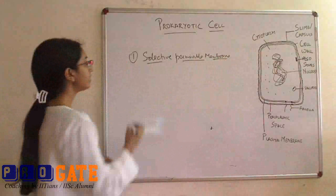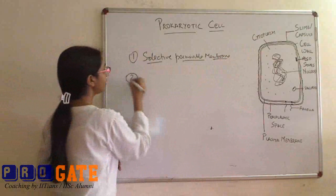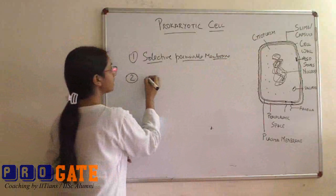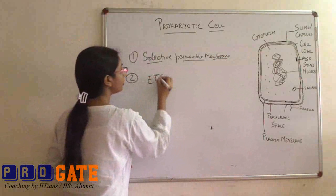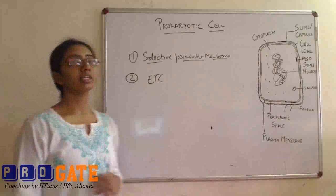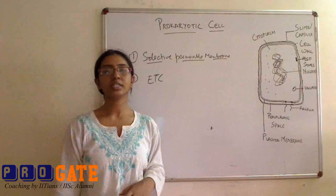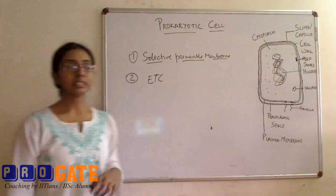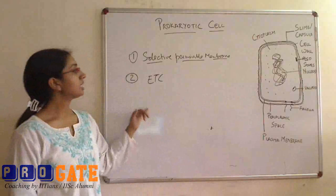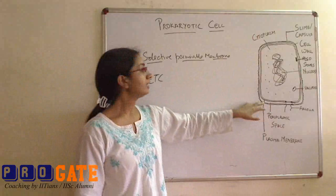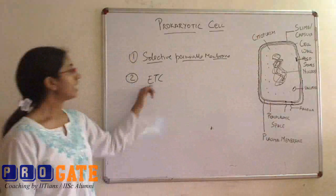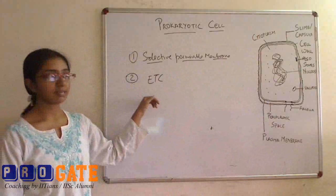The next function of the plasma membrane is the electron transport chain. In eukaryotes, we have organelles like mitochondria in which the oxidation steps occur. But in prokaryotes, these enzymes are present in the periplasmic space and the associated plasma membrane has the electron transport chain enzymes embedded.